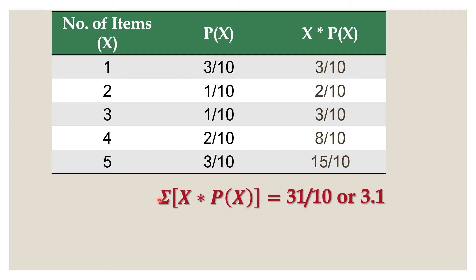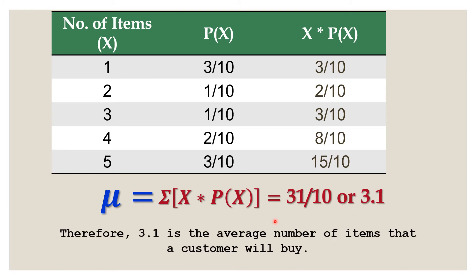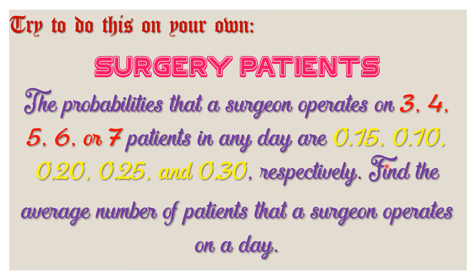The symbol for this is the Greek letter mu, representing the population mean. Therefore, 3.1 is the average number of items that a customer will buy. Now, I want you to try the next example on your own. This will serve as your activity within this week.